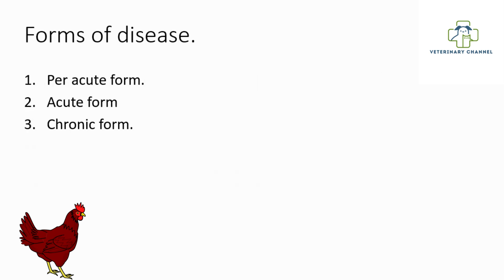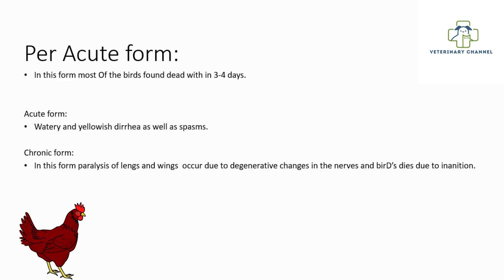Forms of disease: number 1, per-acute form; number 2, acute form; number 3, chronic form. In the per-acute form, most of the birds are found dead within 3 to 4 days. In the acute form, watery and yellowish diarrhea as well as spasms occur. In the chronic form, paralysis of legs and wings occurs due to degenerative changes in the nerves and birds die due to inanition.